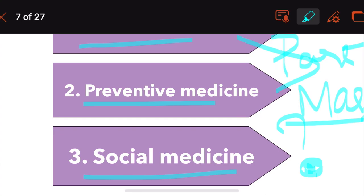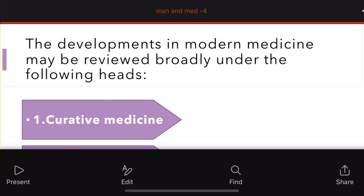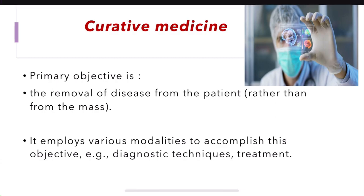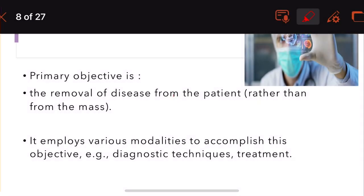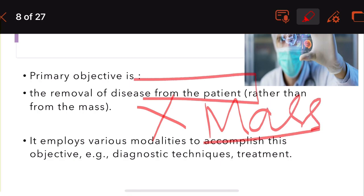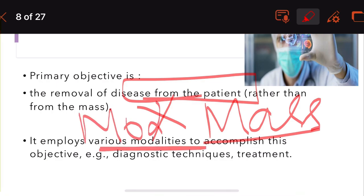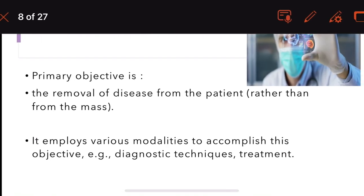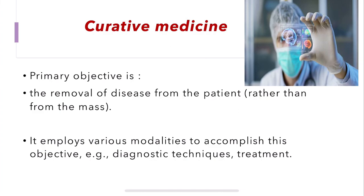Social medicine deals with man as a social being and his relation with the environment. Now in detail: curative medicine's primary objective is the removal of disease from the patient rather than the mass. There is no mass involvement — it is just the individual patient. The various modalities to accomplish this objective include the use of diagnostic techniques and treatment.